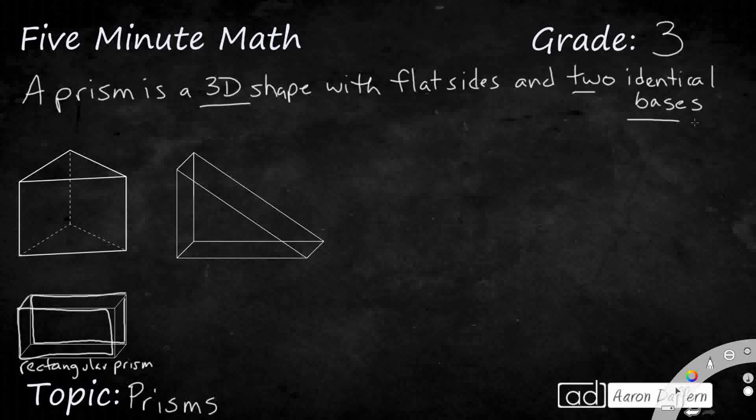You could also say that the top rectangle is going to be the same as this bottom rectangle, or the sides. These sides are the same, but think of it like a Kleenex box. That's a rectangular prism. Flat sides and it has at least two identical bases.